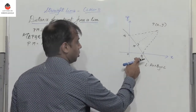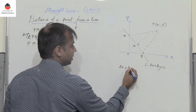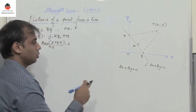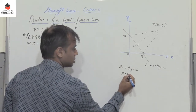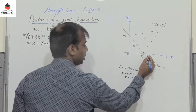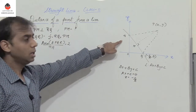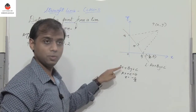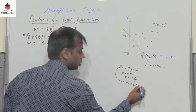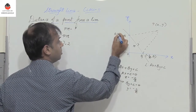Now find the coordinates of Q and R. Q is a point on the x-axis, so y = 0. Substituting into Ax + By + C = 0 gives Ax + C = 0, so x = −C/A. Thus Q = (−C/A, 0). For R, a point on the y-axis has x = 0, giving By + C = 0, so y = −C/B. Thus R = (0, −C/B).